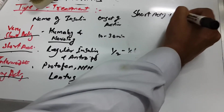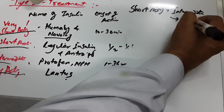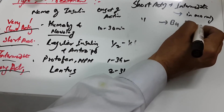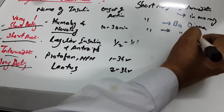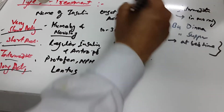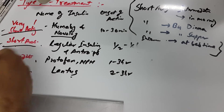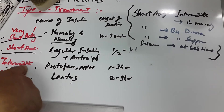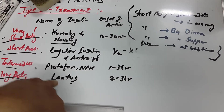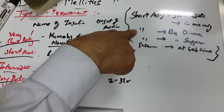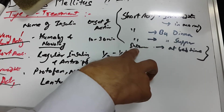How we give these insulins is important. In the morning, we give short-acting plus intermediate-acting insulin together. Before dinner, we give short-acting insulin. Before supper, we also give short-acting insulin. At bedtime, we give intermediate-acting insulin. These timing combinations are essential to remember.